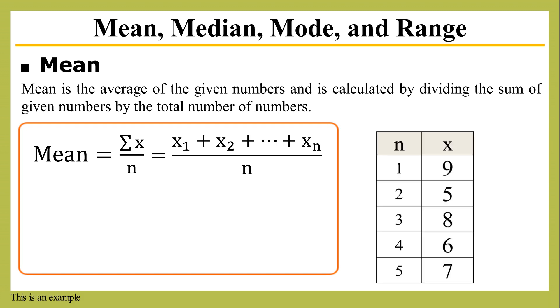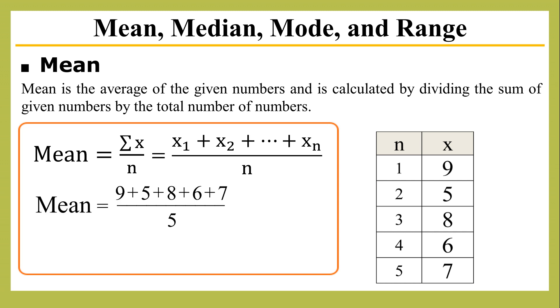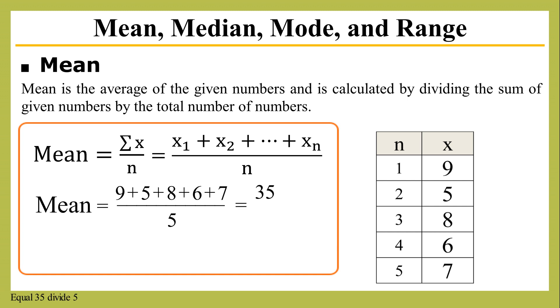This is an example. I apply the numbers in the formula, which equals 35 divided by 5. Therefore, the mean equals 7.